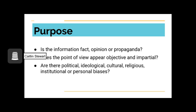The fifth factor is purpose. Why did the author write this resource? Do they need an enticing article so that lots of people click on it? Do they need to publish an article to keep their job? Are they trying to convince you or others to support a cause? When you consider the purpose behind why someone is writing, you can more easily see how that purpose might sway what they say. Ask yourself: is the information fact, opinion, or propaganda? A source on green space in Seattle written by a developer is likely to be motivated by business interests. You also want to consider whether or not the point of view appears objective and impartial.